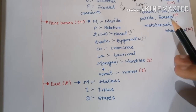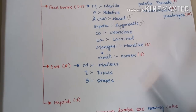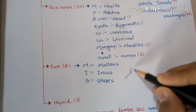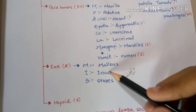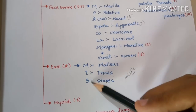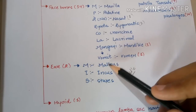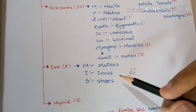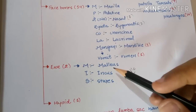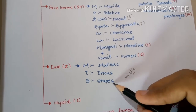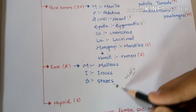In the middle ear, there are three bones. You can memorize them as SIM — S for Stapes, I for Incus, M for Malleus. These bones are arranged in order from the outer ear to the inner ear: Malleus, Incus, and Stapes. Stapes is the smallest bone in our body.